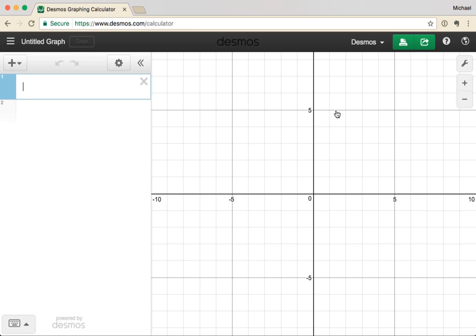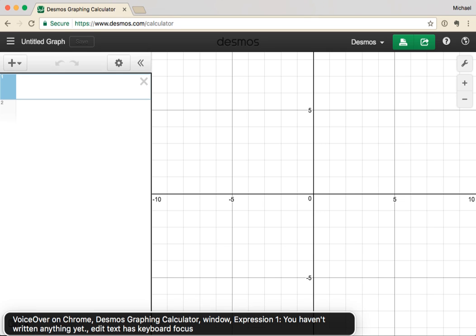Let's start by turning on the screen reader. VoiceOver on Chrome, Desmos graphing calculator, window, expression one, you haven't written anything yet. Next, I'll write an equation. Note how the screen reader calls out the position of the cursor to guide my entry.